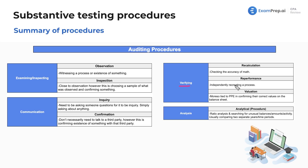We've got re-performance — this is independently recreating a process, usually for test of controls, making sure that the internal control operates the way it was intended to. And then lastly, valuation. This is tied to PP&E and many other accounts — confirming the correct values of any asset on the balance sheet.